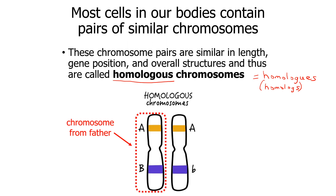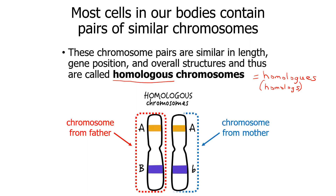The reason we have pairs is because one of those chromosomes in the homologous pair you got from your father, and the other one you got from your mother. They're always contributing one of each homologous chromosome from each of your two parents.